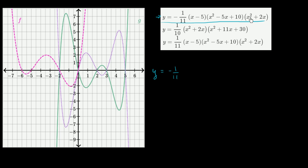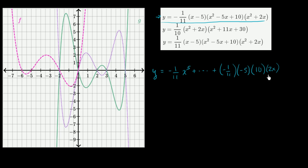That's going to be x to the fifth — x squared times x squared is x to the fourth, times x is x to the fifth. So we get negative 1/11 x to the fifth, plus a bunch of other stuff. The lowest degree term is going to be negative 1/11 times negative 5, which is positive 5/11, times positive 10 — so roughly positive 100 over 11. But let's just leave it like this; that's our lowest degree term.